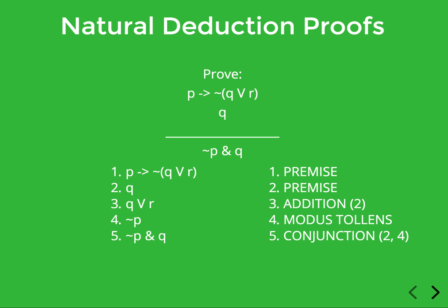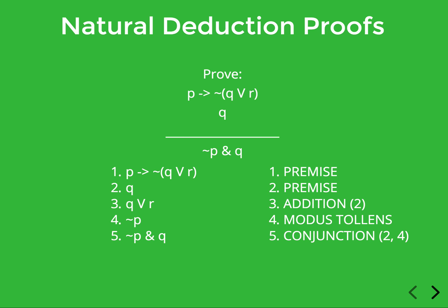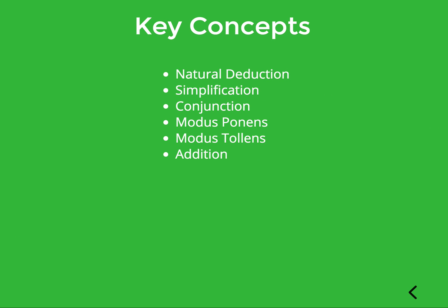Despite the minor citation error with modus tollens — which should cite lines one and three — we now have a complete proof moving from the premises to the conclusion. This is much more compact than a truth table proof, and hopefully it follows something more like the way we naturally think about logical arguments. In this section, we introduced the general strategy of natural deduction and went over the basic rules of inference: simplification, conjunction, modus ponens, modus tollens, and addition.